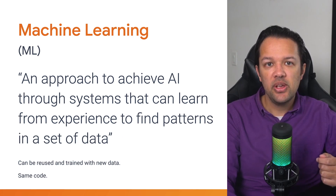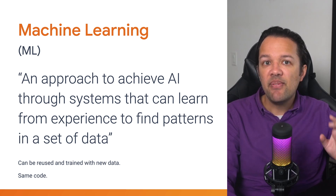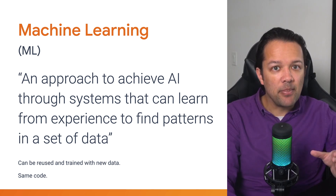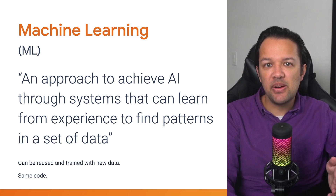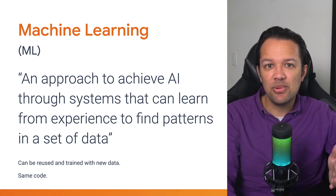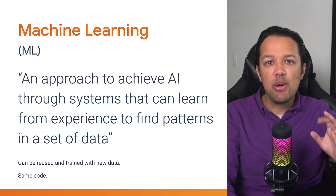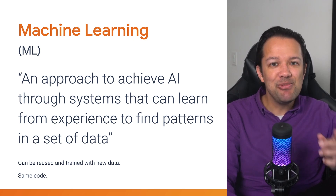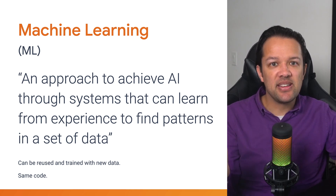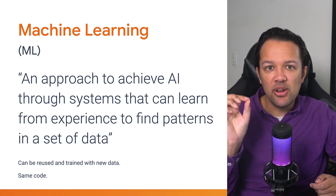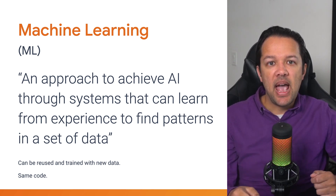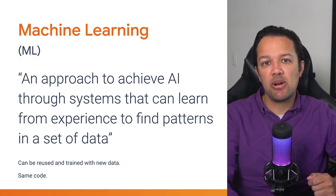Next up, you have machine learning, or ML for short. Machine learning is an approach to achieve AI. Essentially, this is the implementation of the actual program that runs and can learn from prior experience to find patterns in a given set of data. It can then use this knowledge to classify previously unseen examples of the same type in the future. What makes these machine learning programs powerful is that they can be reused and trained with new data without changing the code itself. So if I create a machine learning system that recognises cats, it can use the same code without modification to then recognise dogs, just by feeding it different training images for it to learn from. This is very powerful and a big difference to how you used a program in the past.